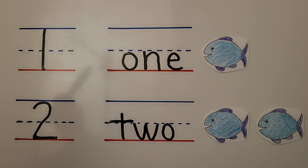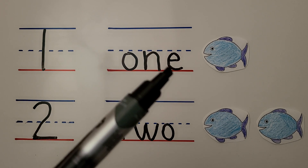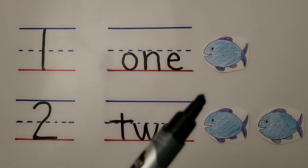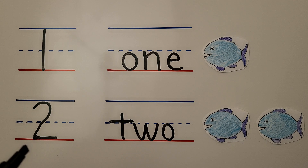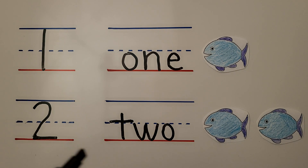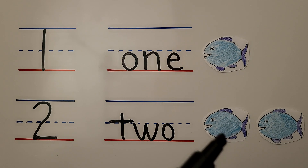Here's the number one. Here's the word one — it's O-N-E. There's one fish. Here's the number two. Here's the word two — it's T-W-O. We have one, two fish.